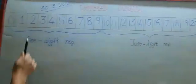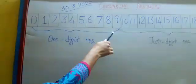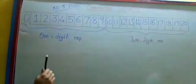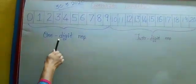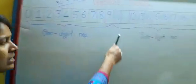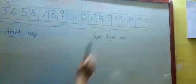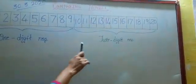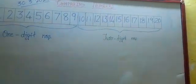One-digit numbers have only one place — that is, one place only. Two-digit numbers have two places: the one's place and the ten's place.